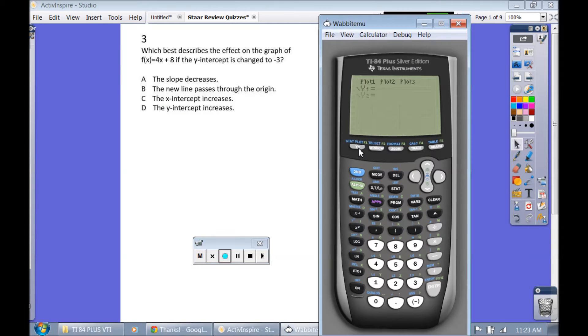Okay, number 3. Which best describes the effect on the graph of f of x equals 4x plus 8 if the y-intercept is changed to negative 3? So f of x is the same as y equals. So we're going to type in the first one, 4x plus 8. And then I've bolded the second graph. We're going to change that 8 to a negative 3. And let's see what happens to the graph here.